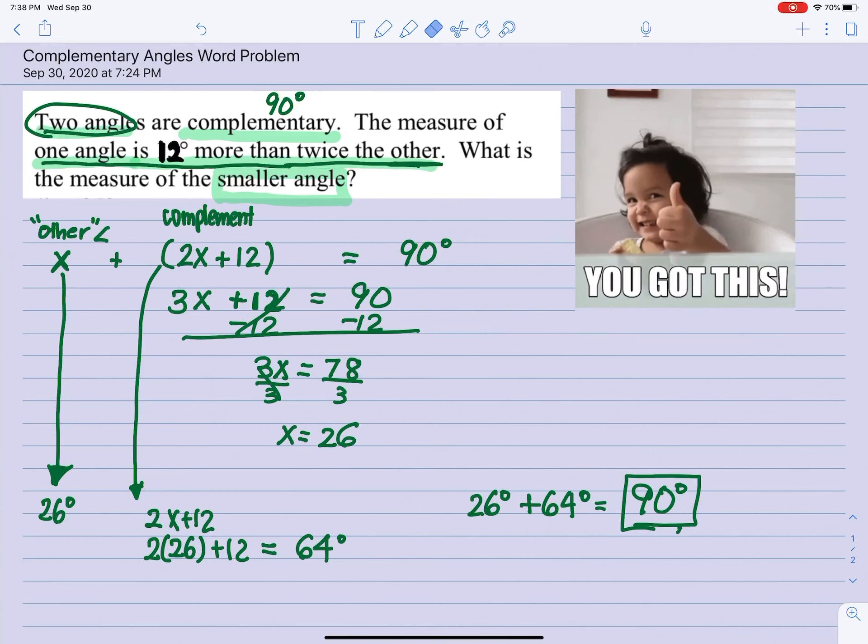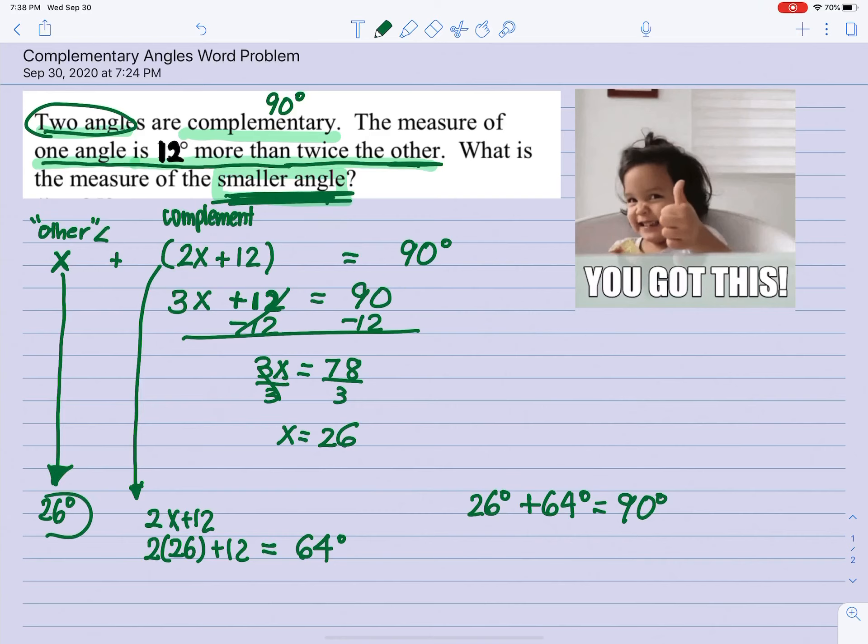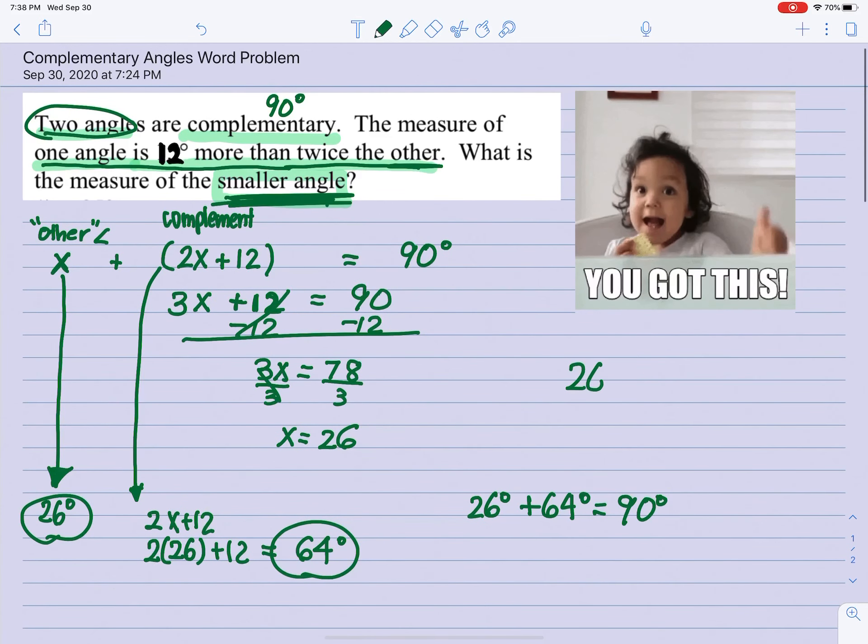Now I kind of sidetracked for a moment. So what was the question asking for? The question was asking for the smaller angle. So we have 26 degrees and 64 degrees. That means 26 degrees is the smaller angle. I hope that helped. Bye bye.